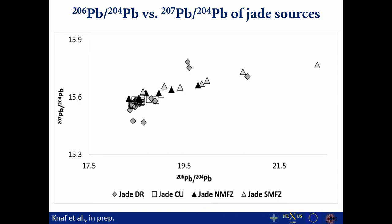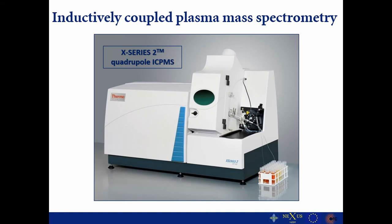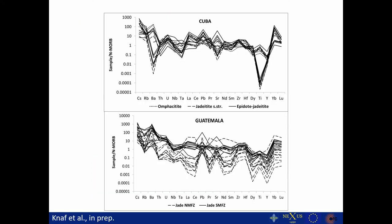Looking at the lead isotopic composition, there is high variability in the data. Different reasons account for this: fluids may be generated from different rock types, and different parent rocks may have served as protoliths. We also see, for the southern Motagua fault zone and the Dominican Republic, rocks with very high time-integrated uranium-thorium-lead ratios, pointing to very old rocks that contributed to jadeite formation. We also analyzed trace elements by ICP-MS, and this is an example of how a normalized trace element pattern might look.